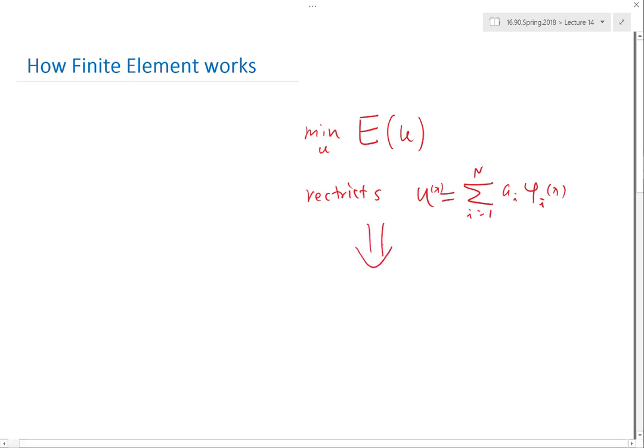So by doing this restriction, the problem turns into a minimization over a1, a2, etc. an, the E of u of a. So let me just write it down, E of summation of a_i times phi. So that's simple.